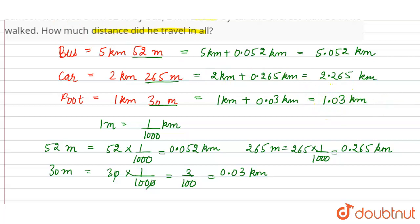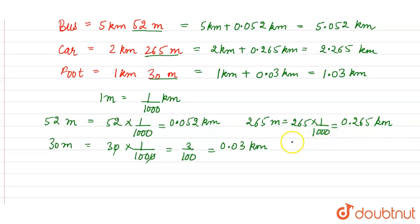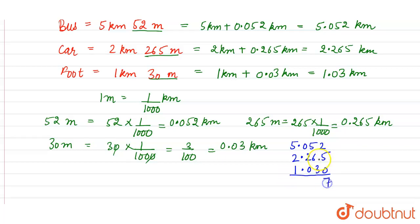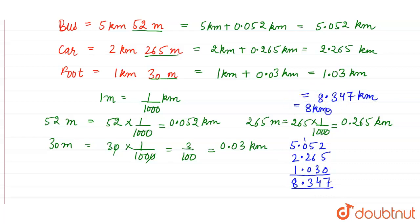To find the total distance covered by Samson, we add the three values: 5.052 plus 2.265 plus 1.030. Adding gives us 8.347 kilometers, or we can say 8 kilometer 347 meter.